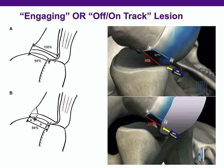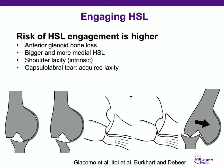In this slide, this Hill-Sax lesion is on the glenoid tract and is not engaging in the provocative position. Whereas this other Hill-Sax lesion, even though of the same size, is off-track because the glenoid has anterior rim deficiency, which reduces the width of the glenoid tract. So the risk of engagement is higher if there is anterior glenoid bone loss. If the Hill-Sax lesion is bigger or more medially placed, it engages even with a normal-sized glenoid tract.